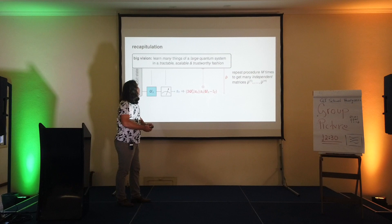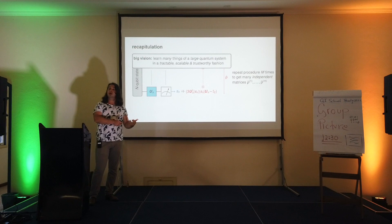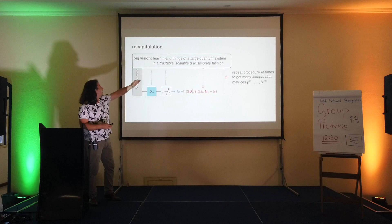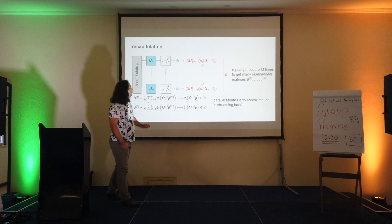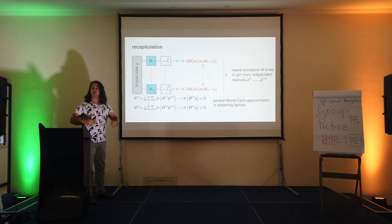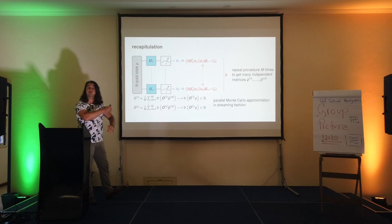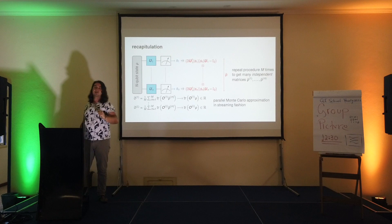Here is the recapitulation. The big vision is we want to learn many things about a large quantum system in a tractable, scalable, and trustworthy fashion. The trustworthiness is something I still owe you. Here is the procedure from the last lecture — these randomized scale approximations. We have a large unknown quantum state of n qubits, and in order to explore all directions of Hilbert space, we include a layer of single-qubit gates chosen randomly from the x-, y-, or z-bases.